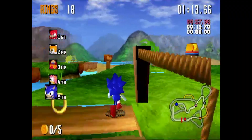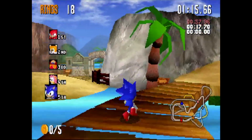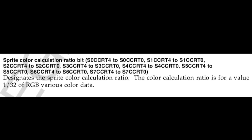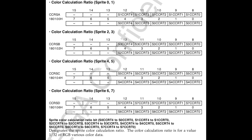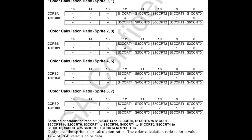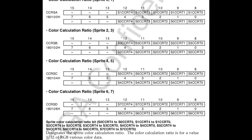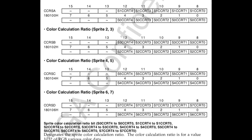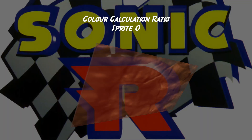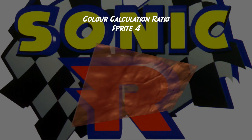I was intrigued by a section of the Saturn hardware registers that were referred to as colour calculation ratio for sprites. In short, it allowed you to set a kind of mix ratio for how the finished sprite would be drawn over the background graphics. This didn't affect how sprites draw over each other, just the background, but for a fade this seemed perfect. You could set up to 8 mix ratios, so in theory I could have an 8 step fade for the objects.